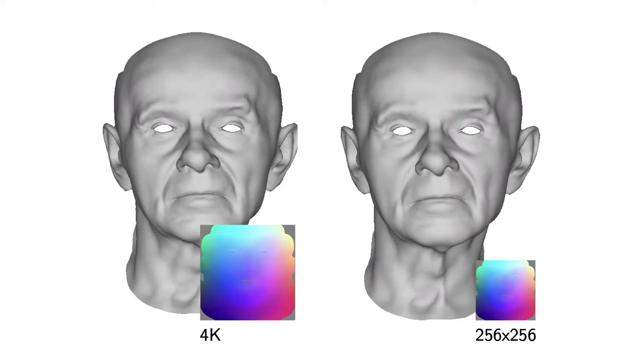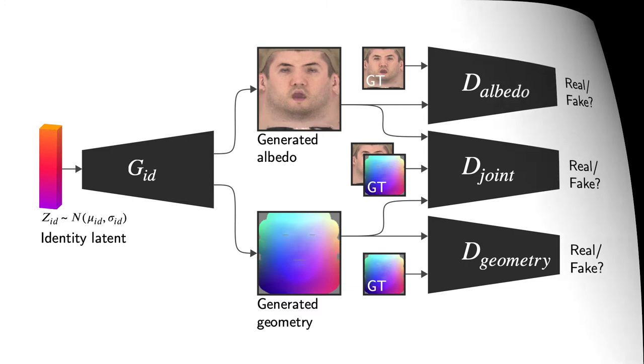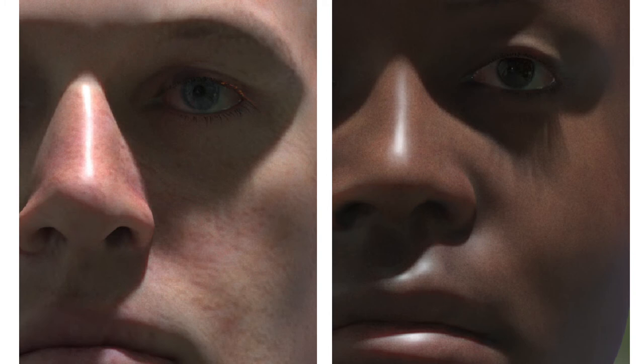From this we can generate new faces by latent space sampling, or transfer facial scan data from a low to a high resolution domain. Material intrinsics are then inferred using a pixel translation network, while additional geometries get fitted using a linear PCA model.